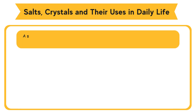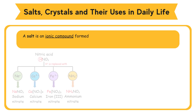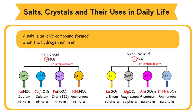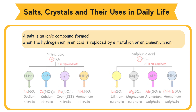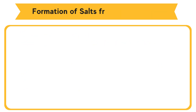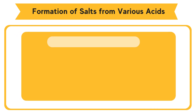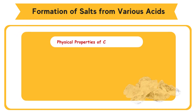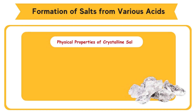A salt is an ionic compound formed when the hydrogen ion in an acid is replaced by a metal ion or an ammonium ion. Formation of salts from various acids. Physical properties of crystalline salts.